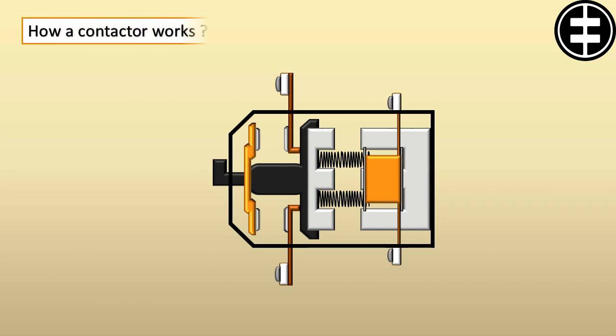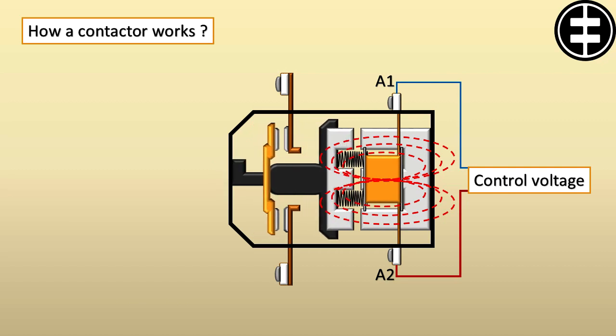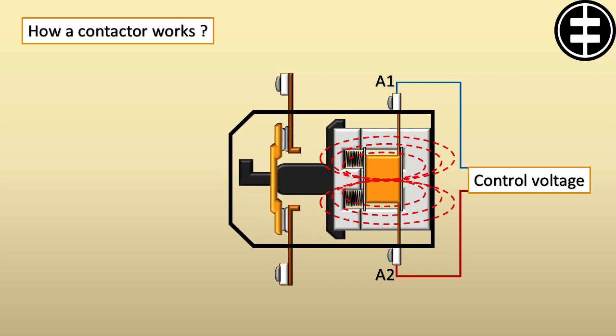How a contactor works: When applying the control voltage on the coil leads A1 and A2, a magnetic field will be generated, attracting the movable iron core towards the fixed core. So the movable contacts which are fixed to the movable core will move as well towards the fixed contacts to make contact and allow the power lines to run to the load.